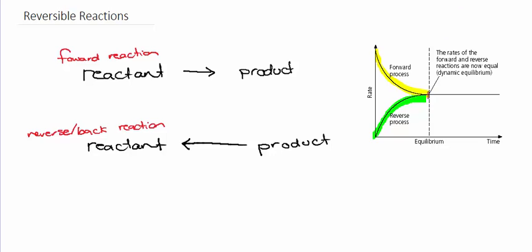After some time, that forward and reverse reaction will be occurring at the same rate. So that means that as reactants are converted into products, the products are converted into reactants at the same rate. What that means is that the concentration of each is not going to change — so we're going to end up with a constant concentration of reactants and products.